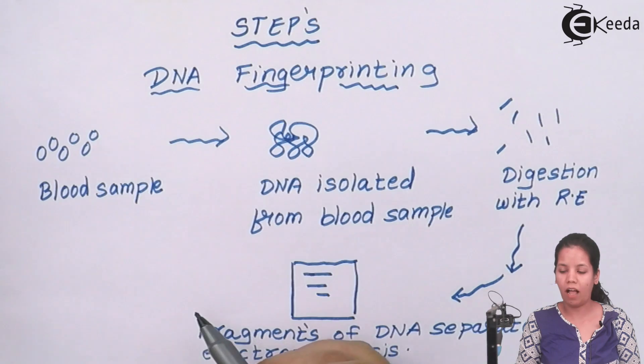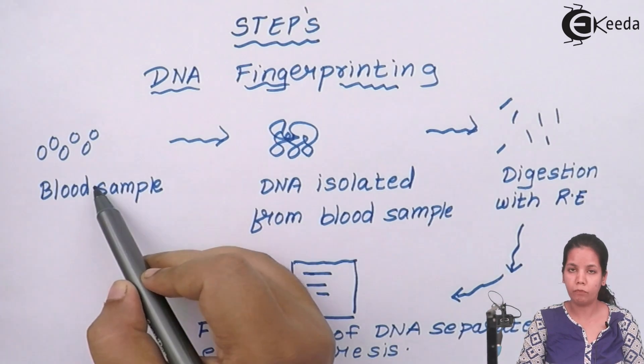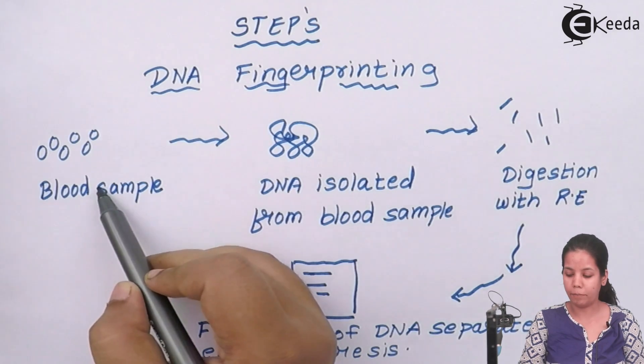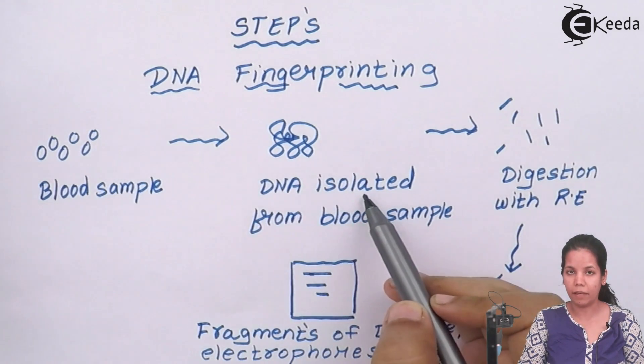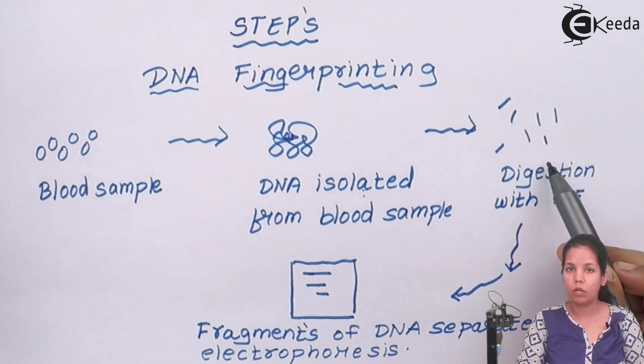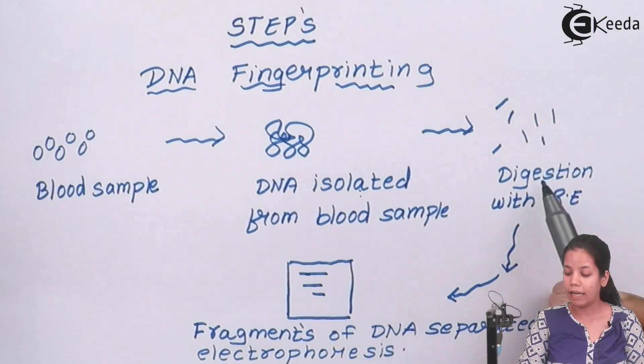The steps of DNA fingerprinting are: first we need blood sample or any sample which you are using. Then from that blood sample you isolate the DNA. That DNA is subjected to cleaving or breakage with the help of restriction enzyme or molecular scissors.